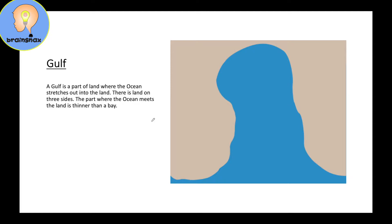The next landform I would like to talk about is a gulf. A gulf is a part of the land where the ocean stretches out into the land. Here is the land and the ocean goes into it. There is land on three sides — one side, a second side, and a third side — and the part where the ocean meets the land is thinner than a bay.